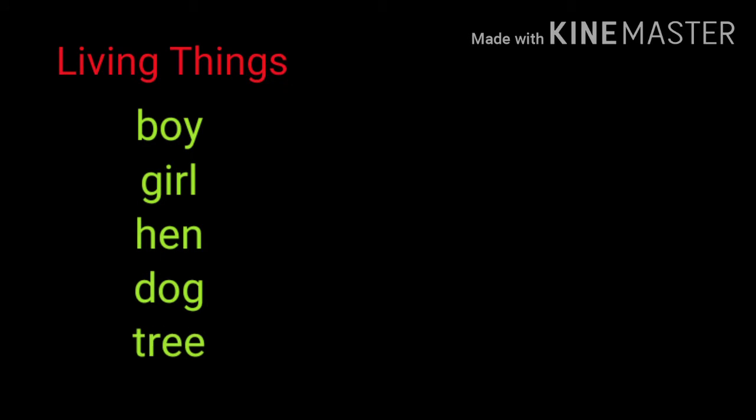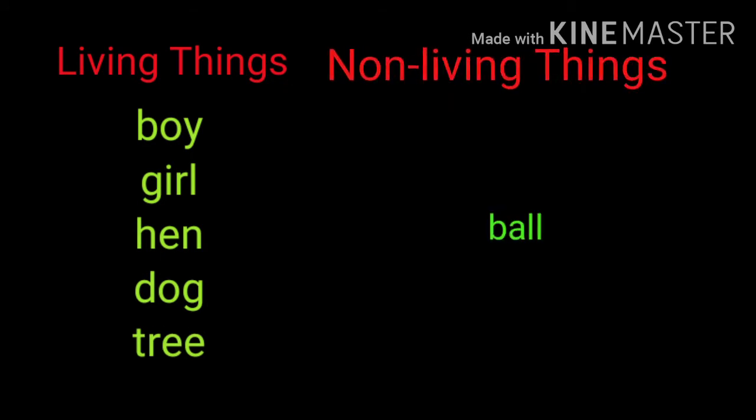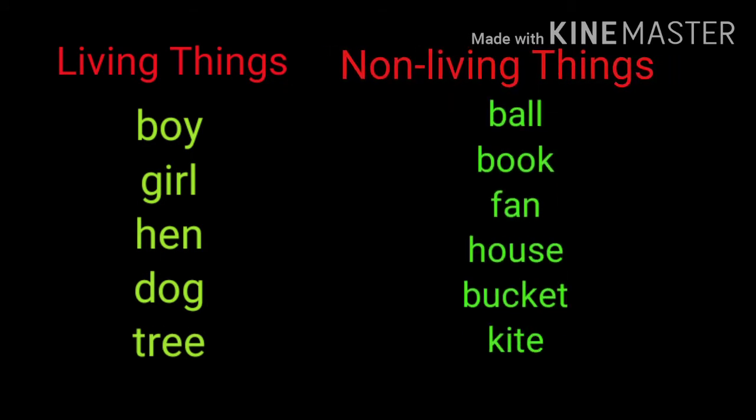In this picture, the living things are boy, girl, hen, dog and tree. And non-living things are ball, book, fan, house, bucket and kite.